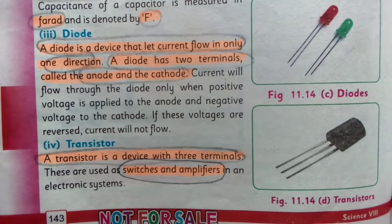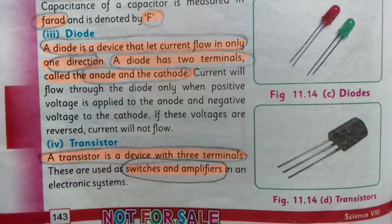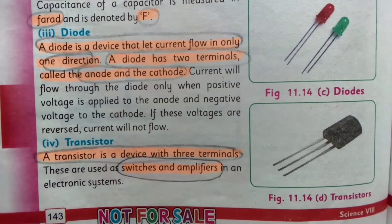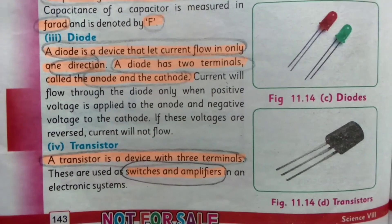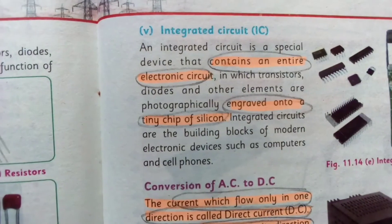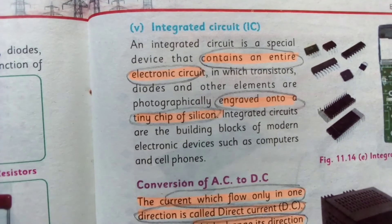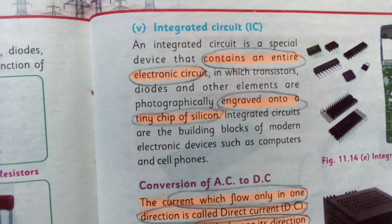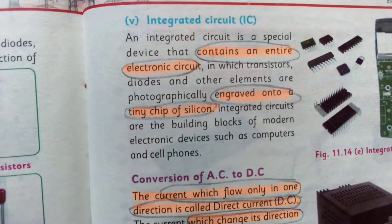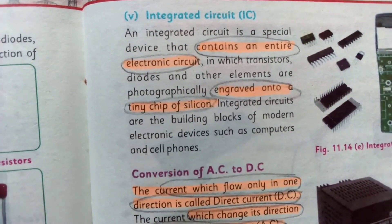A transistor is a device with three terminals that can be used as switches and amplifiers. An integrated circuit is a special device that contains an entire electronic circuit.